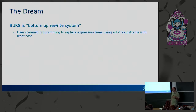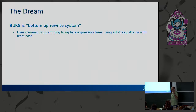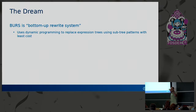BURRS uses two passes over the IR trees. It does a bottom-up pass where it looks at progressively larger and larger trees to figure out the least-cost way to implement each piece and grow that up. It decorates the tree as it goes up, and then does a second pass going top-down to actually emit the code.